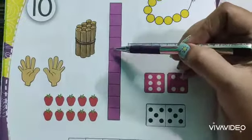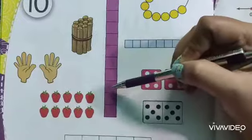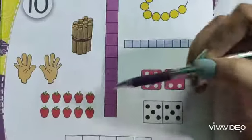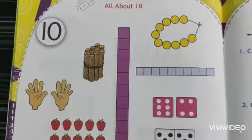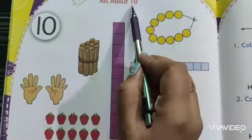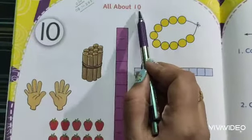1, 2, 3, 4, 5, 6, 7, 8, 9, 10. So this chapter is related to number 10. 1, 0, 10.